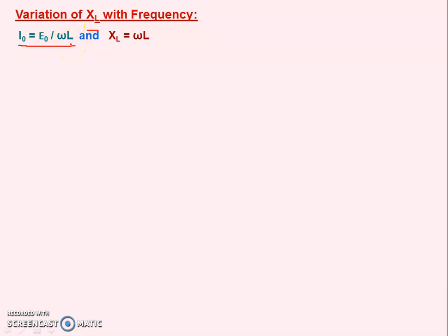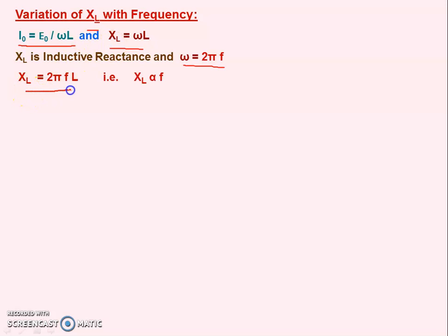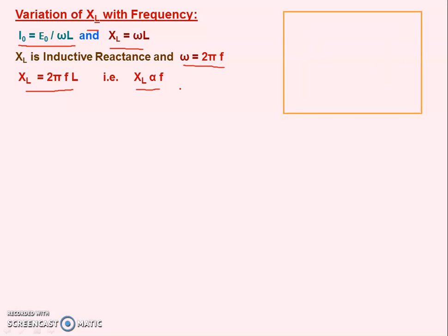The quantity ωL has the property of resistance - it is the resistance offered by the inductor. That is called inductive reactance, XL = ωL. Now ω is angular frequency, and angular frequency ω = 2πf, where f means frequency of AC. So we can write XL = 2πfL. Since 2π is constant and L is constant for a particular inductor, we can say that XL is directly proportional to f. If frequency of AC increases, the inductive reactance also increases.